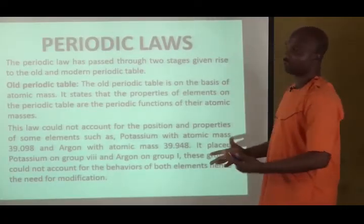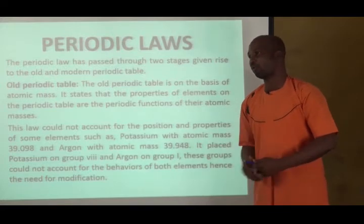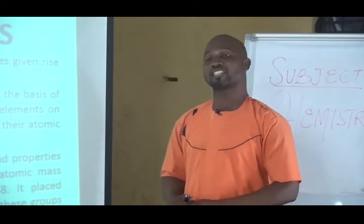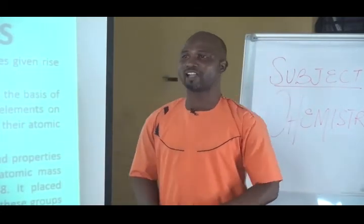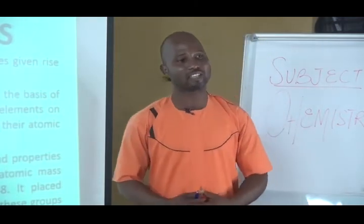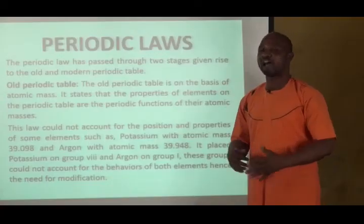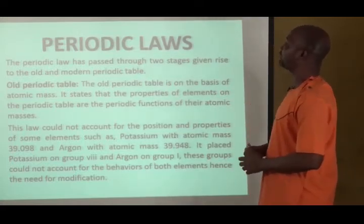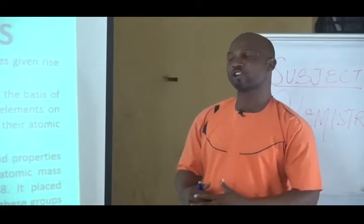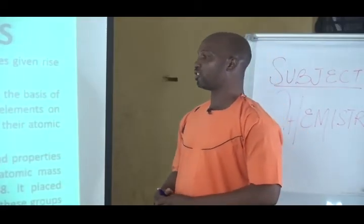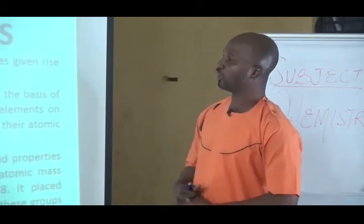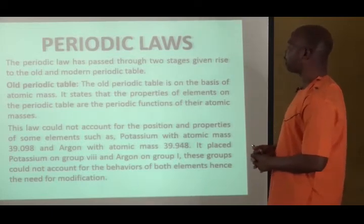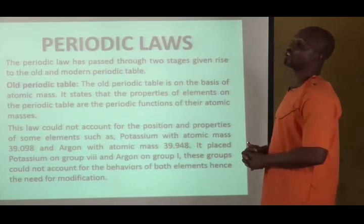Now we are going to look at the periodic laws. Before we arrive at the final periodic law, there were other periodic laws that came before it. Because of their irregularity, inconsistency, and anomalies, these laws were further modified. The first law was based on atomic mass, and it was referred to as the old periodic law because it couldn't stand the test of time. The old periodic law states that the properties of elements on the periodic table are a periodic function of their atomic masses.